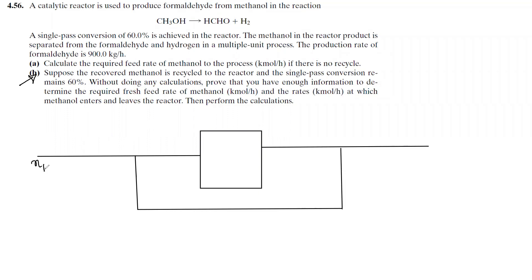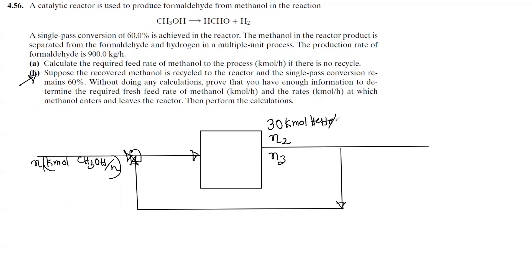We are defining the fresh feed as N1, in kmol CH3OH per hour. With the recycle, we identify the mixed feed point and a separation column. The product stream contains N2 and N3: 30 kmol HCHO per hour and the corresponding H2, along with the CH3OH recycle stream N3.